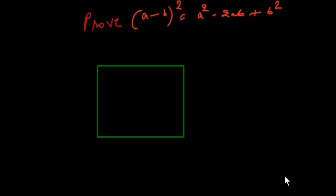Today we will prove (a-b)² = a² - 2ab + b². Suppose this is my length in the scale form. This is in the scale form, suppose it is a, its length is a and its breadth is also a.